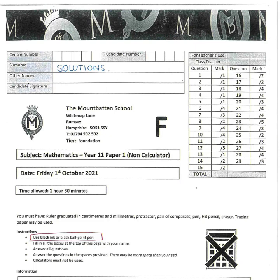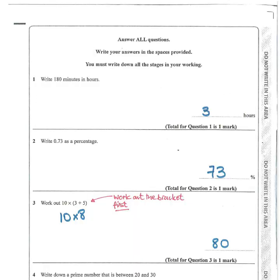Let's go on to the questions. The first few questions should be really easy. 180 minutes: there are 60 minutes in an hour, so 180 is 3 hours. 0.73 as a percentage: 0.73 means 73 out of 100, which is literally 73%. Make sure you write it as a percent — don't write 73 over 100, because that's a fraction, not a percentage. For the bracket question, remember to do the bracket first. So 3 plus 5 is 8, and then 10 times 8 is 80.